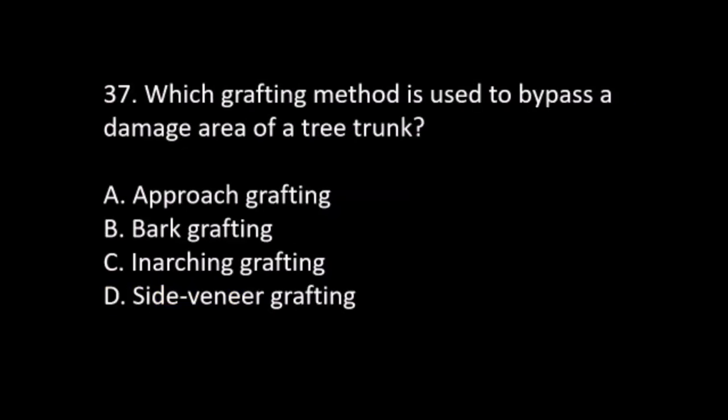Number 37. Which grafting method is used to bypass a damaged area of a tree trunk? A. Approach grafting. B. Bark grafting. C. Inarching grafting. D. Side veneer grafting. The answer is C. Inarching grafting.